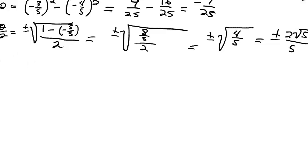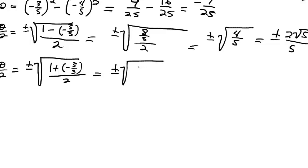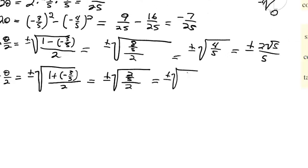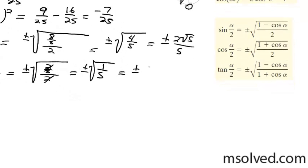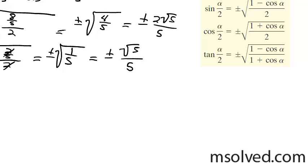And then for the cosine of theta divided by 2, plus or minus square root of 1 plus cosine, which is negative 3 over 5, over 2, which is equal to plus or minus square root of 5 over 5, so it's going to be 2 over 5 divided by 2, which is ultimately plus or minus square root of 1 over 5. Because these two cancel each other out. And because you don't want radicals on the bottom, it's ultimately going to be √5 over 5.